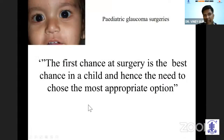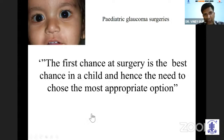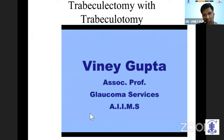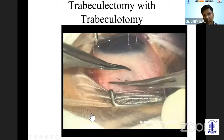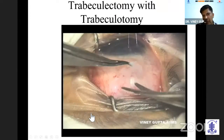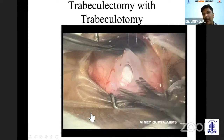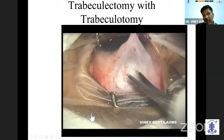Whatever surgery you decide to do must be the best and most appropriate option, because you do not want to expose this child to multiple anesthesias, multiple surgeries, or multiple EUA visits — and all the associated problems for the parents as well. The important question many ophthalmologists ask is whether to do a limbal-based or fornix-based trabeculectomy in a child. In a very young child under two years, I would always do a limbal-based surgery, because a fornix-based surgery means many sutures that will subsequently have to be removed — and we want to avoid as many examination and anesthesia visits as possible.